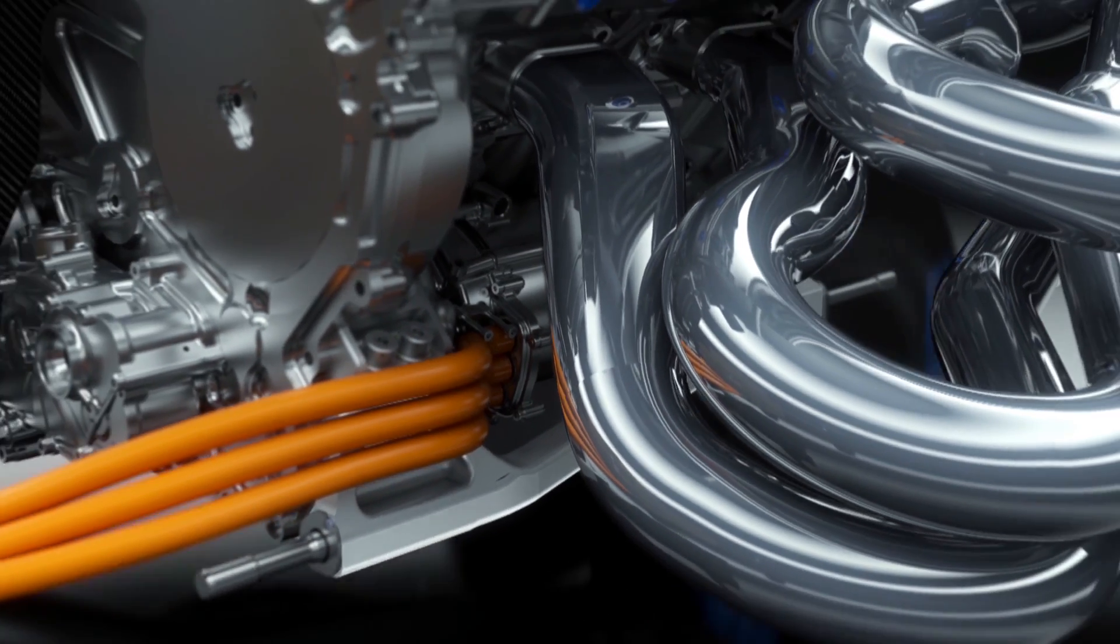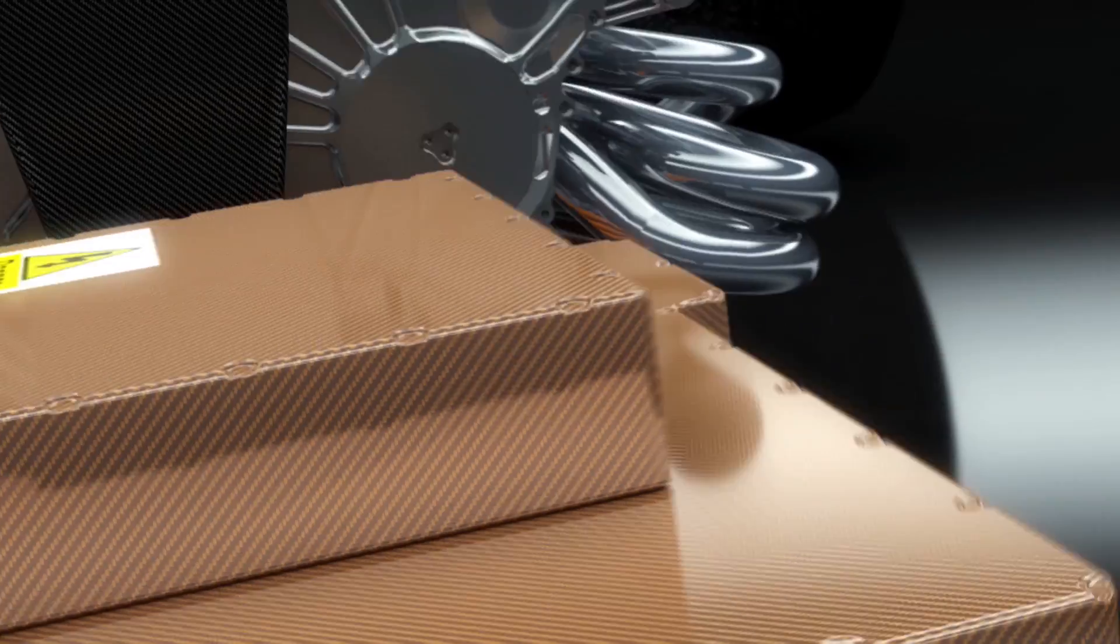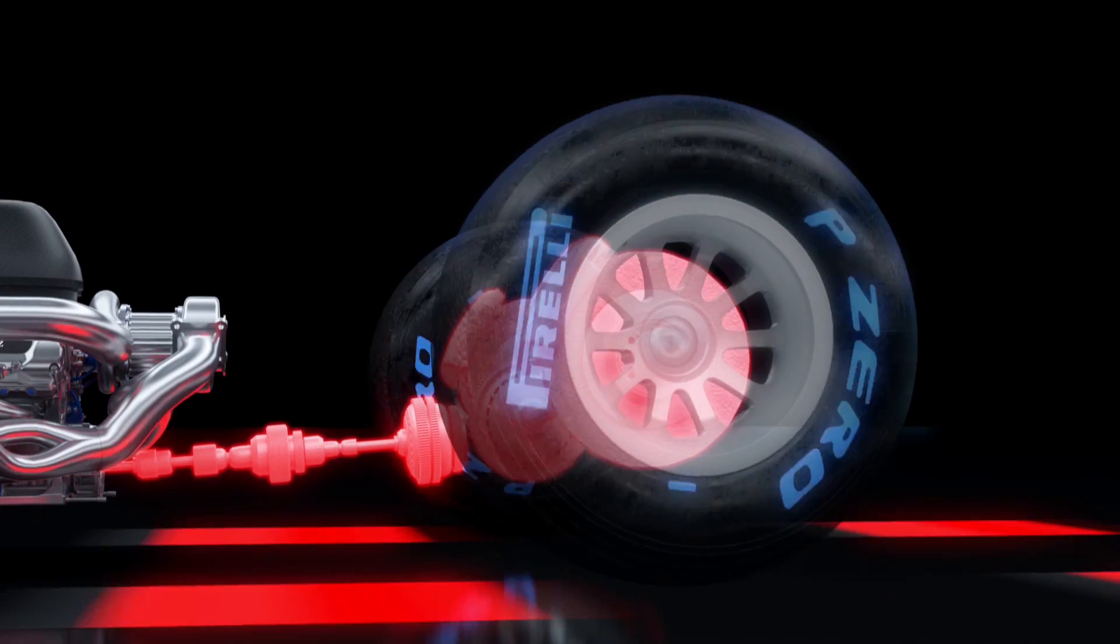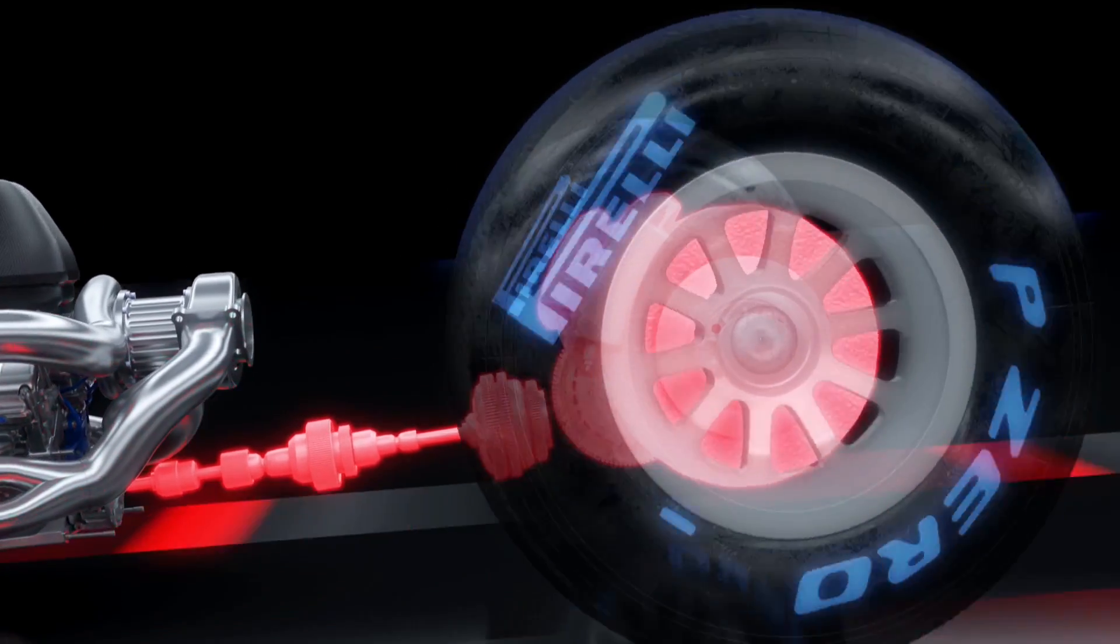Connected to the braking system and acting as a generator, the MGU-K can feed so much energy into the battery every lap that you could talk for 370 hours on your BlackBerry smartphone.